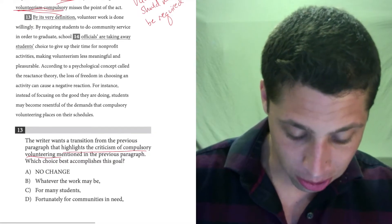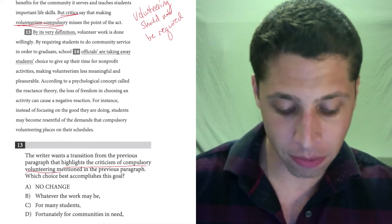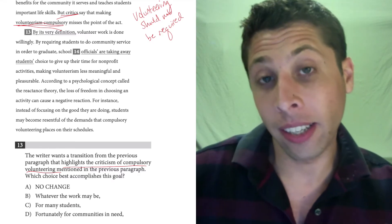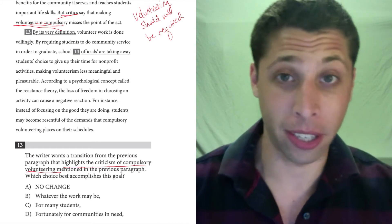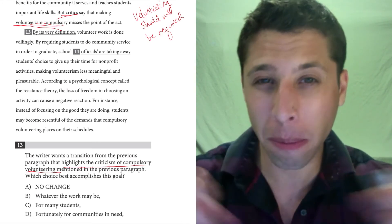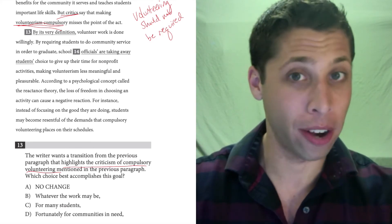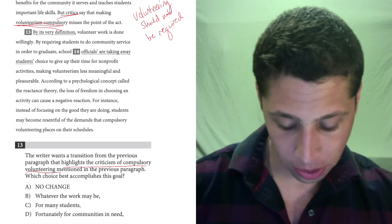So let's look at these choices here. The way it's written is, by its very definition, volunteer work is done willingly. Well, willingly kind of matches with this idea of something being required, right? They're opposites, but they match because we're hitting on the idea of a criticism. There's some sort of disconnect between something being voluntary and something being required. So this seems related. Let's look at the other choices.